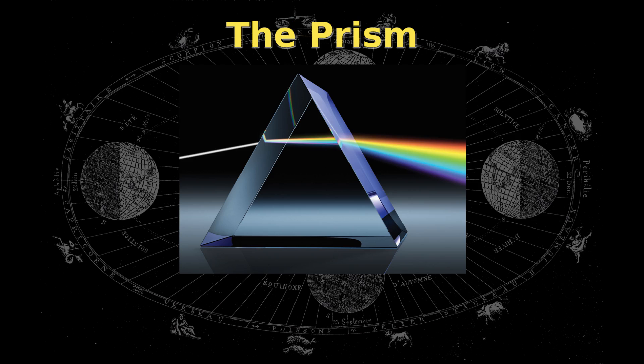A metaphor I like to use to represent a trine is light going through a prism. Because a prism offers little resistance to the light, there's an ease. The light flows through, and it represents the planets in harmony. This also represents a talent.